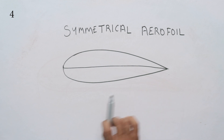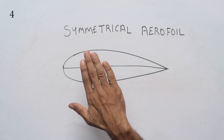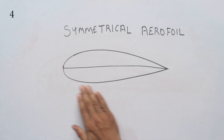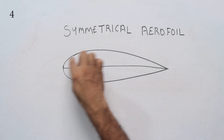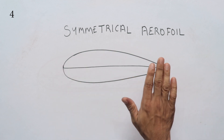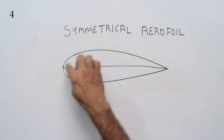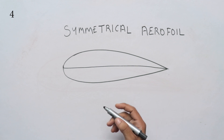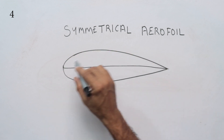Because the upper and lower halves are the same, this Aerofoil can generate lift whether flying upright or inverted. It will be able to lift the aircraft from any angle of attack. If we build a plane in an aerobatic category, we can use a symmetrical Aerofoil.